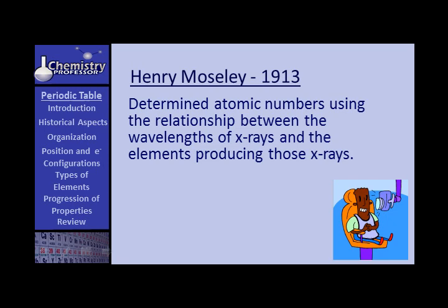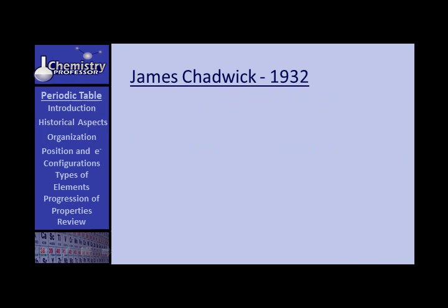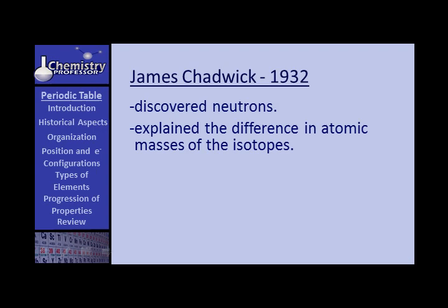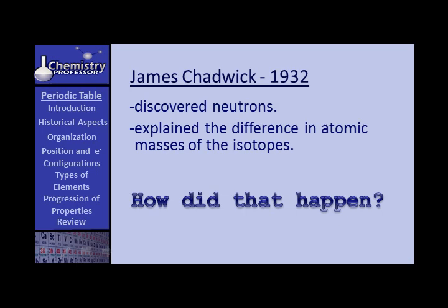Moseley, in 1913, determined atomic numbers using the relationship between wavelengths of x-rays and the elements producing those x-rays. And Chadwick, in 1932, discovered neutrons. They had long thought neutrons existed but weren't able to define or determine them. These neutrons were important because they explained the difference in the atomic masses of the isotopes.